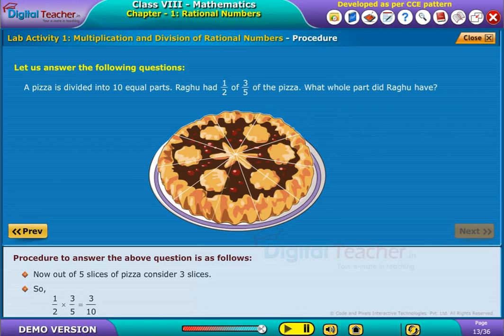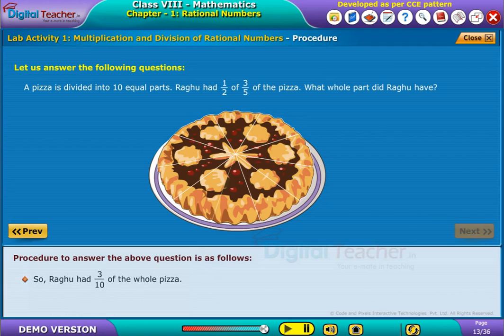So, 1 by 2 into 3 by 5 is equal to 3 by 10. So, Ragu had 3 by 10 of the whole pizza.